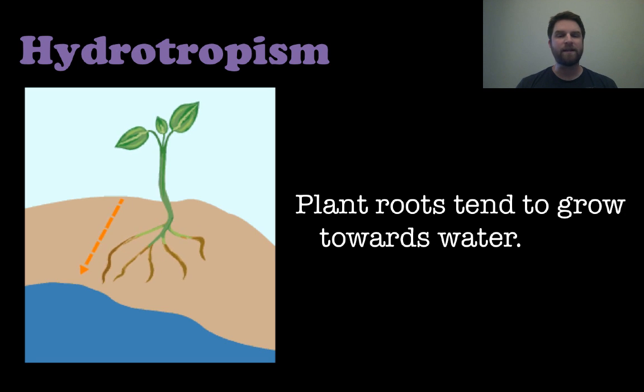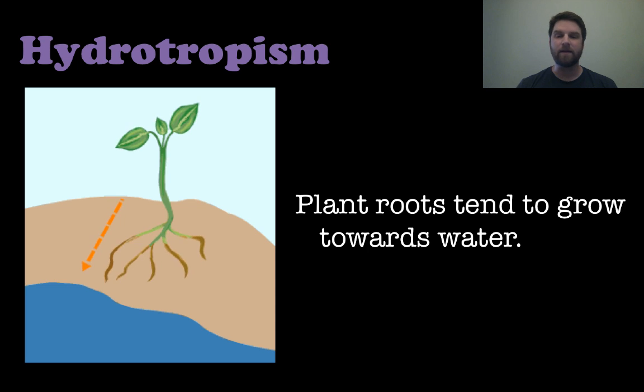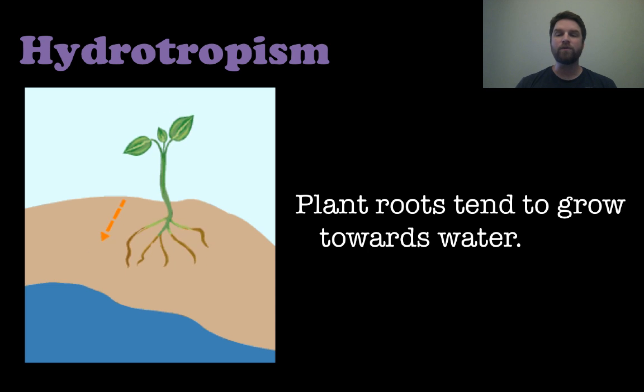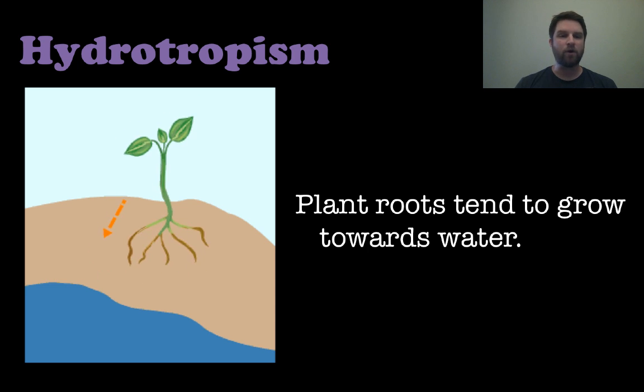Hydrotropism is pretty easy. Plants need water, just like they need sunlight. Plant roots tend to grow towards water — that is hydrotropism.